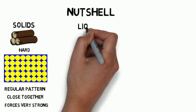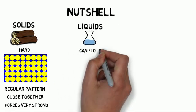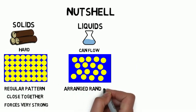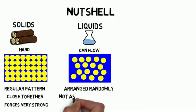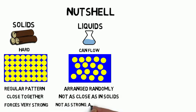Liquids like water can flow because the particles are arranged randomly. They are not as close as in solids and the forces between the particles are not as strong as in solids.